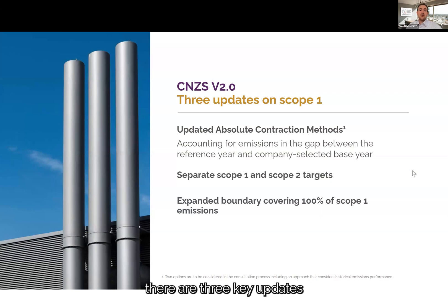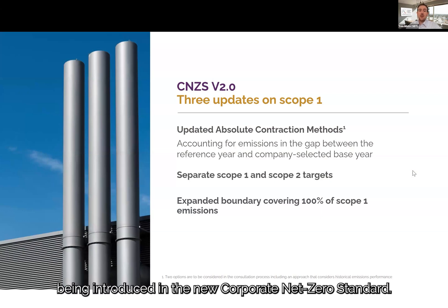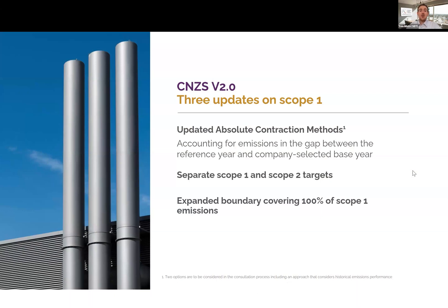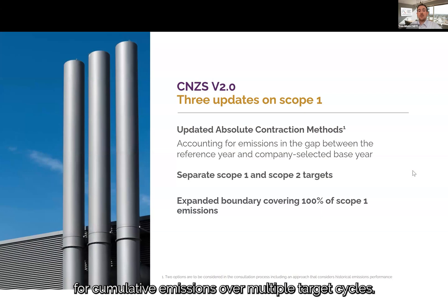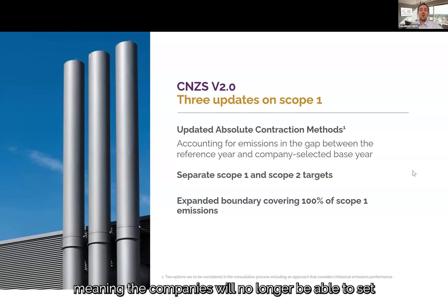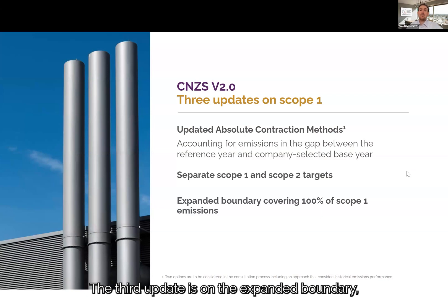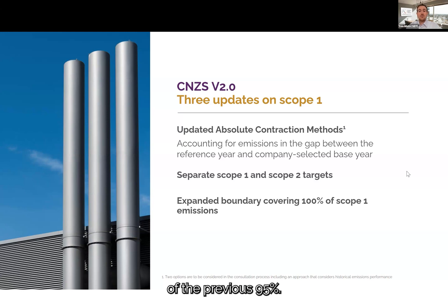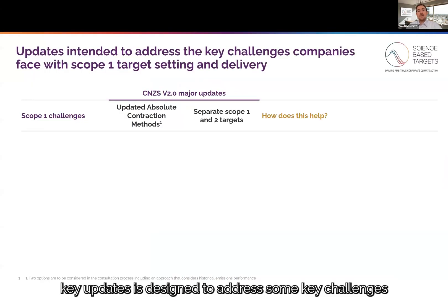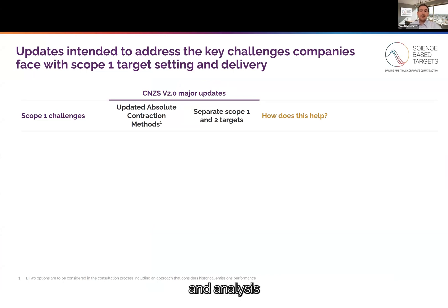On the topic of Scope 1 emissions there are three key updates being introduced in the new Corporate Net Zero Standard. The first update relates to a revised absolute contraction target setting method to account for cumulative emissions over multiple target cycles. The second update is on the separation of Scope 1 and Scope 2 targets, meaning companies will no longer be able to set combined Scope 1 and 2 targets. The third update is on the expanded boundary, which now covers 100% of Scope 1 emissions instead of the previous 95%. Each of the key updates is designed to address key challenges surfaced through research conducted at the SPTI, analysis produced by the academic community, and broader stakeholder feedback.